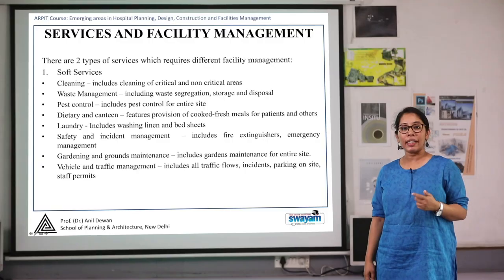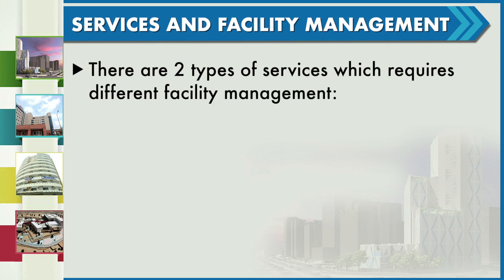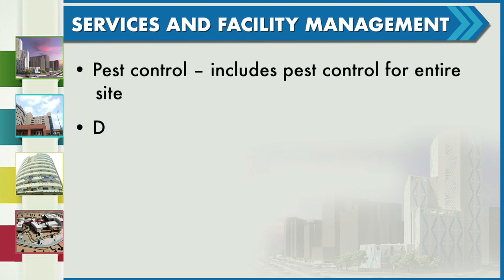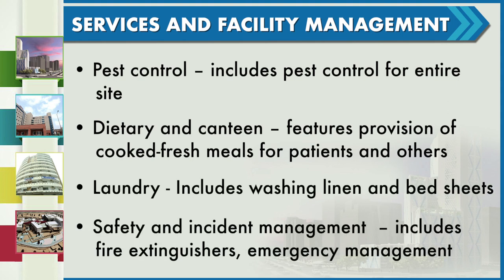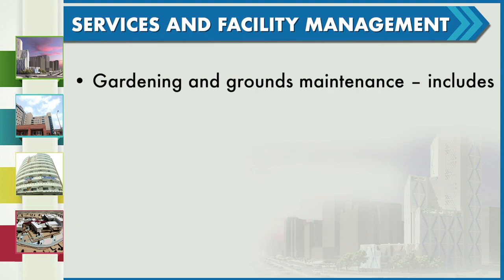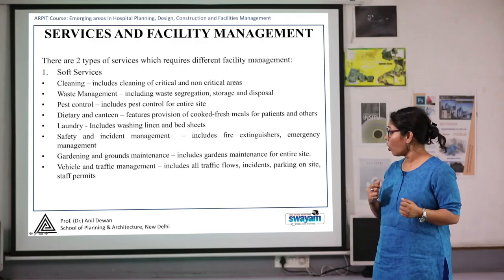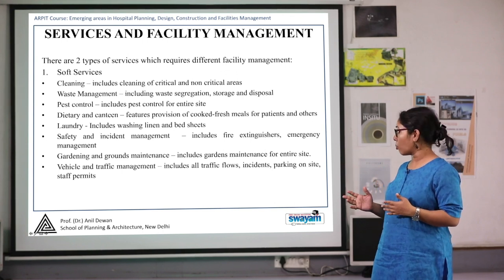There are two types of services: soft services and hard services. Soft services include cleaning, waste management, pest control, dietary and canteen, laundry, safety and incident management, gardening and maintenance, and vehicle and traffic management. All these services need to provide facilities for the smooth running of hospital operations.